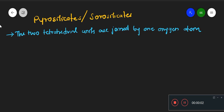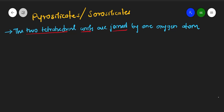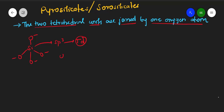In this video we are going to discuss about pyrosilicate, which is also called sorosilicate. In pyrosilicate, two tetrahedral units are joined by one oxygen atom. We know that in orthosilicate, the hybridization of silicon is sp3, so its shape or geometry is tetrahedral.